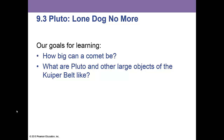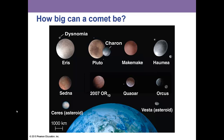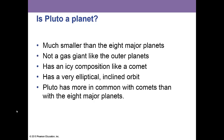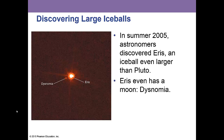Now, a more controversial topic: Pluto. How big can a comet be, and what are Pluto and other large objects in the Kuiper Belt like? Pluto's orbit is tilted and significantly elliptical. Neptune orbits three times during the time Pluto orbits twice, and this resonance prevents any collision. Is Pluto a planet? It's much smaller than the eight major planets, not a gas giant, has an icy composition like a comet, and has a very elliptical inclined orbit — Pluto has more in common with comets than with the eight major planets.